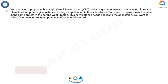You are given a project with a single Virtual Private Cloud (VPC) and a single subnetwork in the us-central1 region. There is a Compute Engine instance hosting an application in this subnetwork. You need to deploy a new instance in the same project in the europe-west1 region. This new instance needs access to the application.